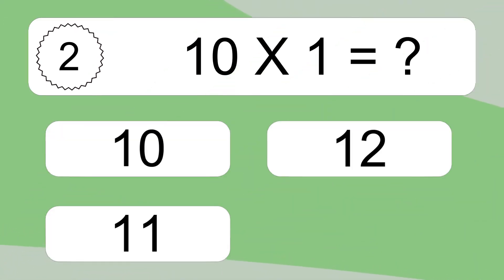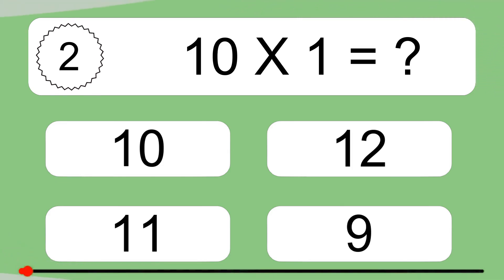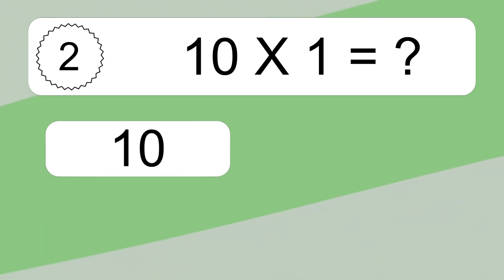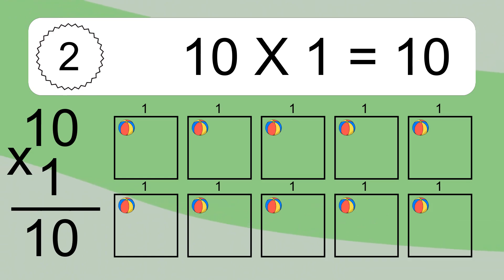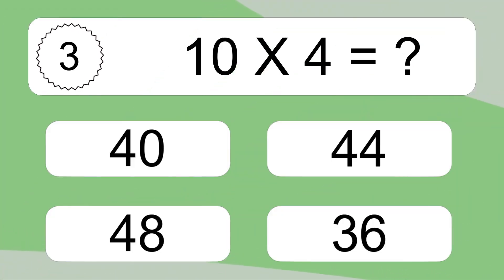10 times 1 equals what? 10 times 1 equals 10. We have 10 boxes, and each box has 1 colorful ball inside. If you count all the balls in all the boxes together, you will have 10 times 1 balls. This equals 10 balls.